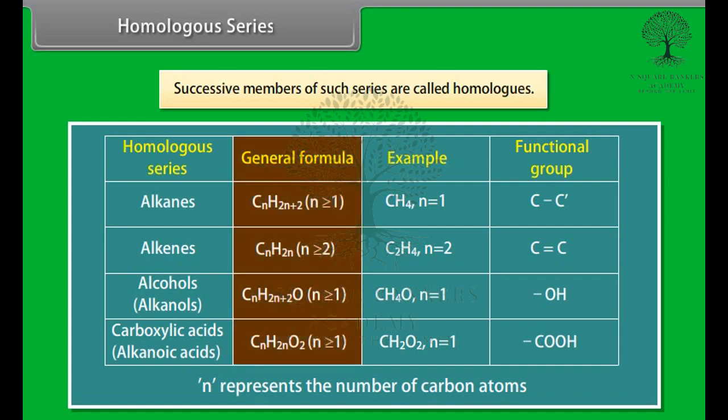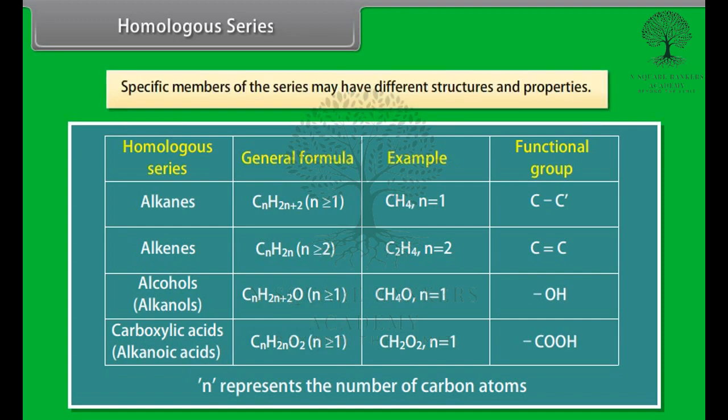Even though the general formula remains constant in a homologous series, specific members of the series may have different structures and properties. However, the reactivity usually remains the same. In any homologous series, a gradation in the physical properties is observed. This gradation occurs due to the increase in the melting points and boiling points along with increasing molecular mass of the compound.